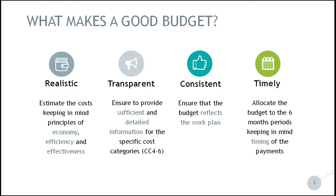Finally, the project budget should be timely. In view of the allocation of budget to reporting periods, the following elements are to be taken into consideration. First, the reporting periods run on a six-monthly basis as from the project start. Second, the budget allocated to each reporting period should be an estimation of the actual payments to be done in the respective reporting period. Therefore, the budget only partly reflects the activities taking place in a certain period. Indeed, if an activity is carried out close to the end of the reporting period, the related payments may take place in the following period, and the costs should therefore be budgeted only in the following reporting period.